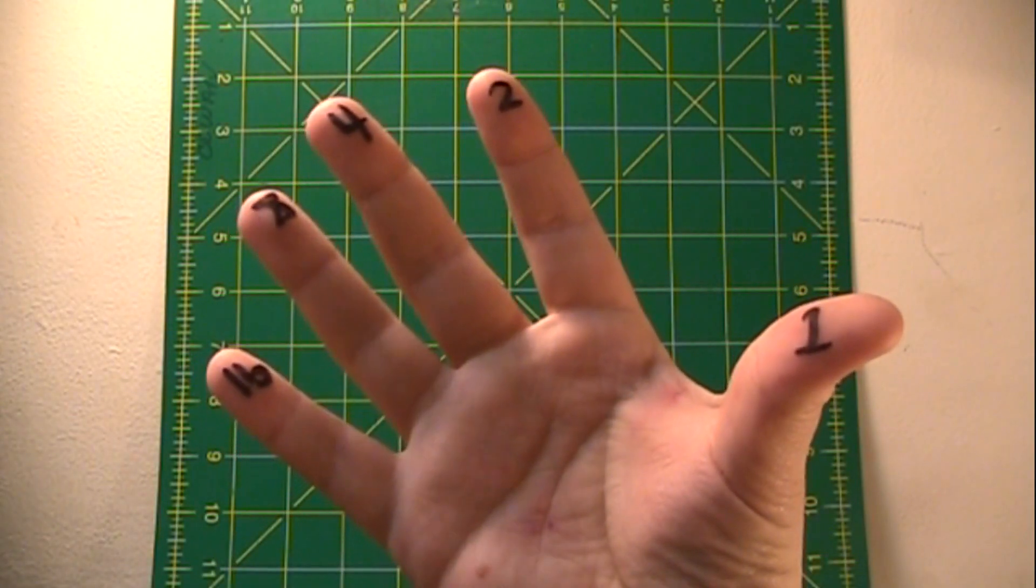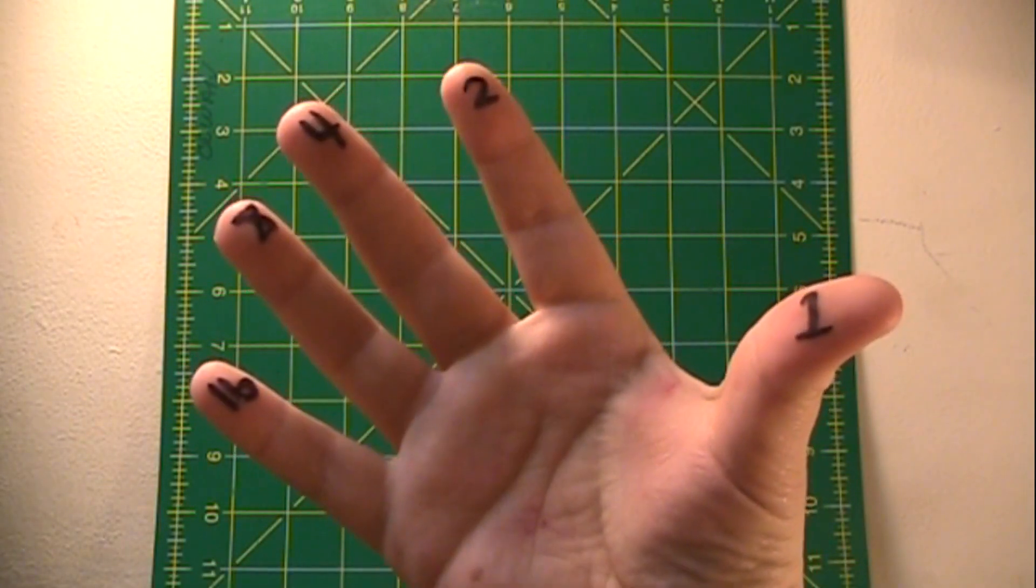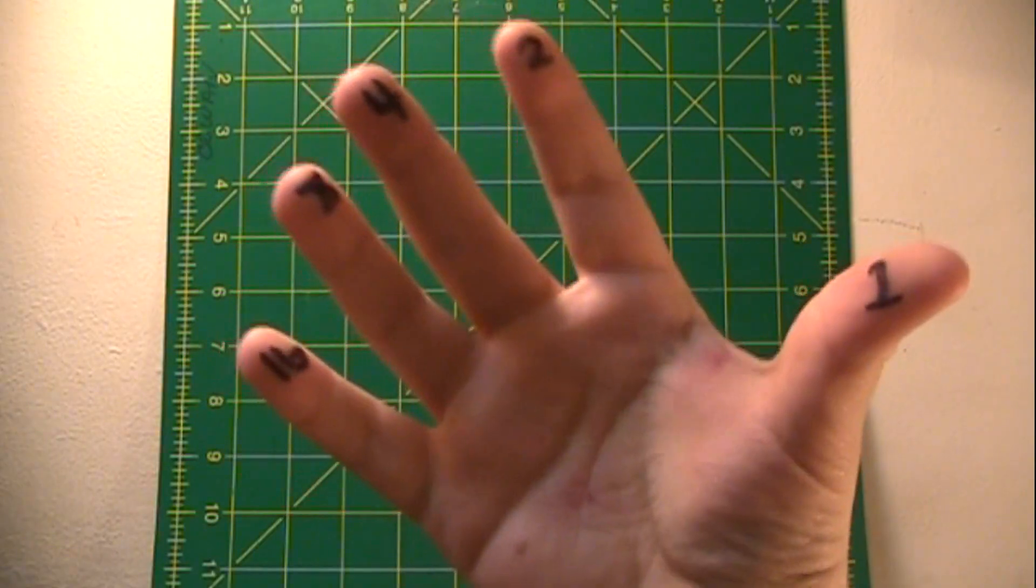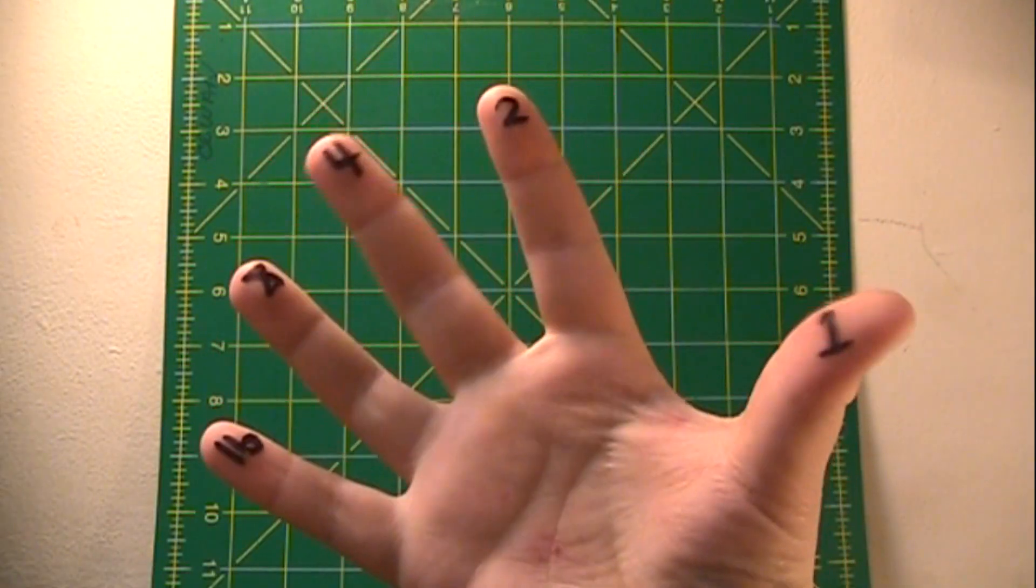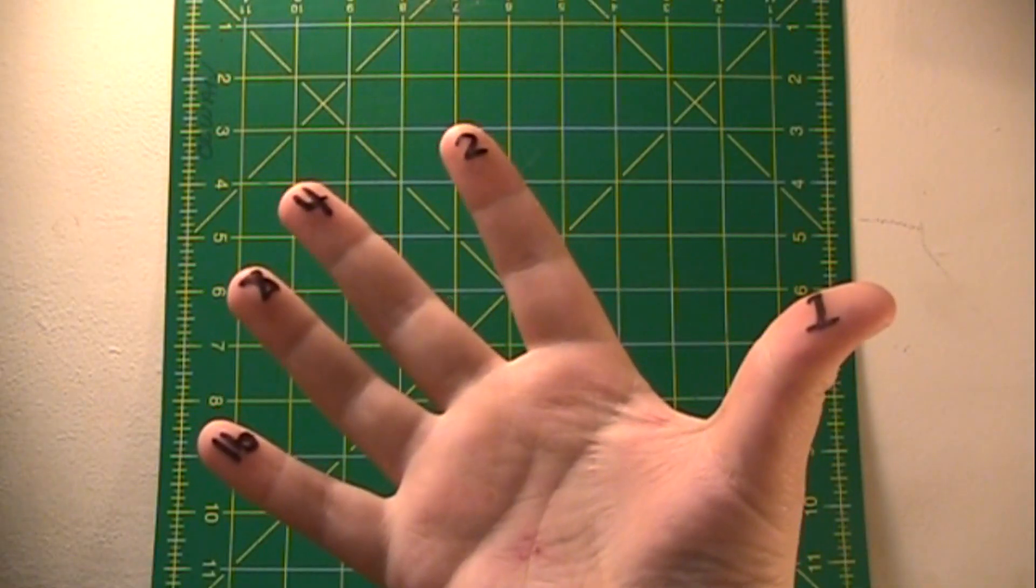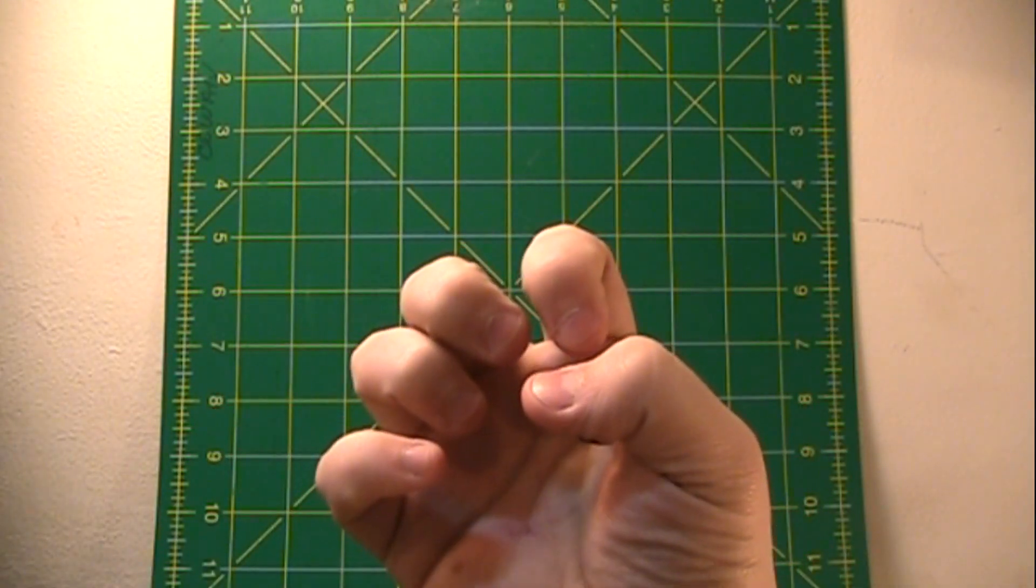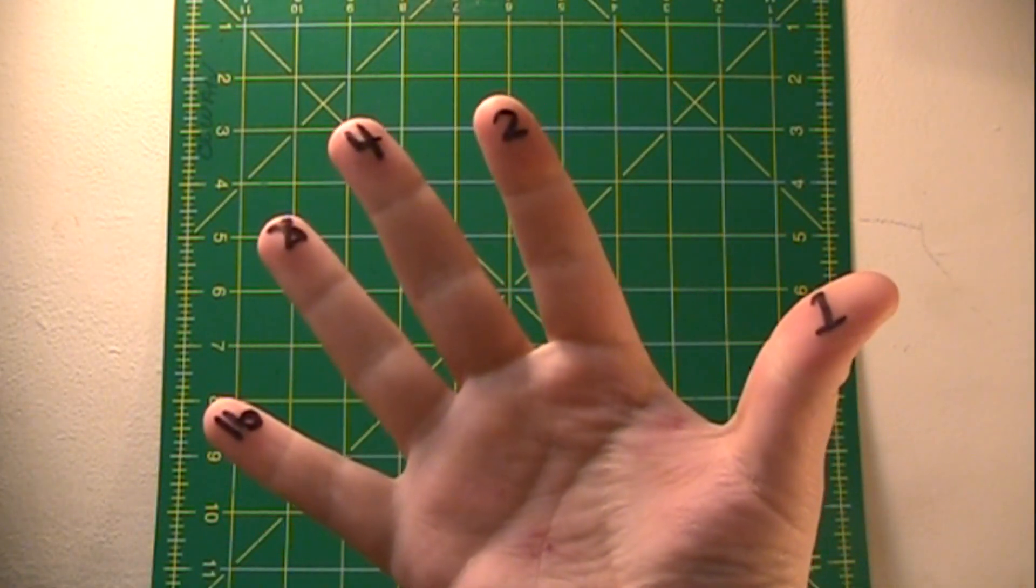Hello. Today, I'm going to teach you how to count up to 31 on one hand by using binary. Each finger is going to count as a binary switch. So here's all off, which is 0. Here's all on, which is 31.